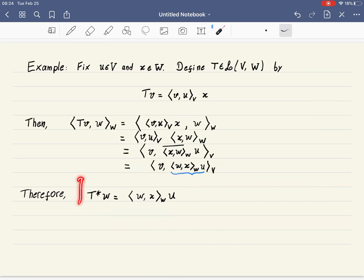So we have found what T star is. That's the formula for T star. It takes a vector, computes the inner product of that vector and x, multiplies that number by u. That gives us a vector in V. So T star goes from W to V.